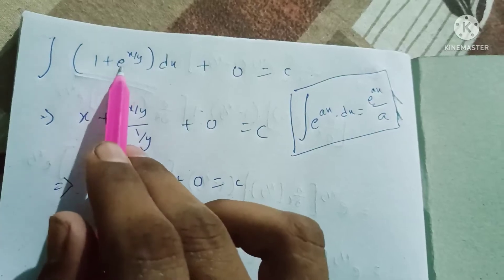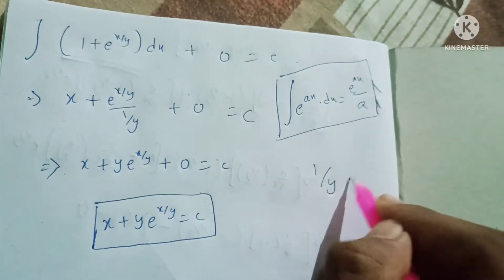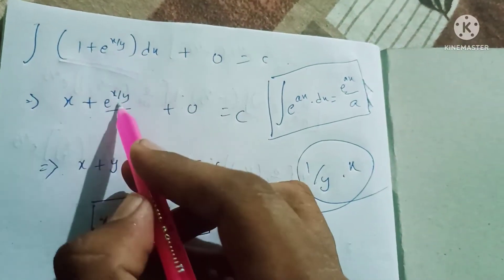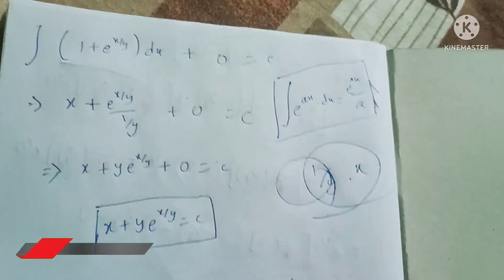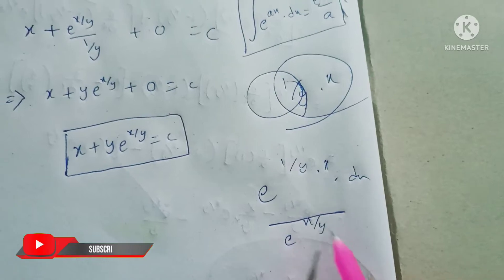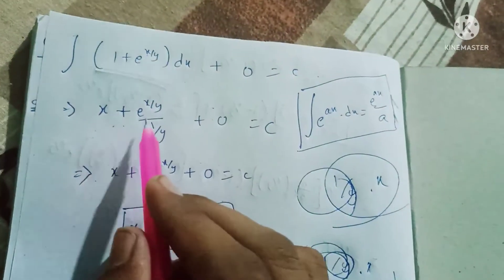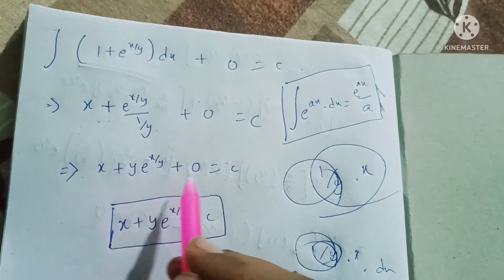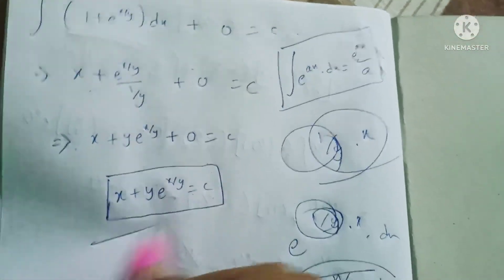Using the integration formula for e power ax into dx equals e power ax by a, where a is equal to 1 by y. So x plus e power x by y divided by 1 by y plus 0 equals c, which gives x plus y into e power x by y plus 0 equals c. Therefore the general solution is x plus y into e power x by y is equal to c.